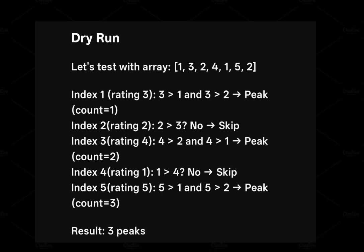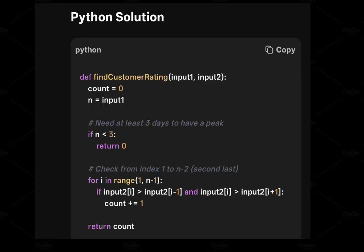Starting from index 1: is 3 greater than 1? Yes. Is 3 greater than 2? Yes. It is a peak, so we update count from 0 to 1. At index 2: is 2 greater than 3? No — skip it. At index 3: is 4 greater than 2? Yes. Is 4 greater than 1? Yes — it is a peak, so we update count to 2. This condition is followed for each index and we return the final count of peaks.